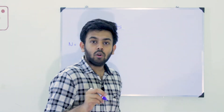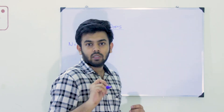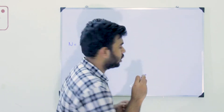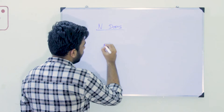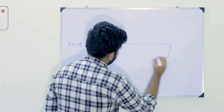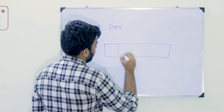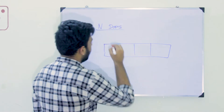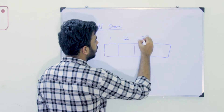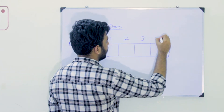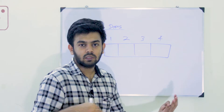Now let's take an example with four doors - N is equal to four. So we have door number one, door number two, door number three, door number four. If you have four doors, you also have four persons.